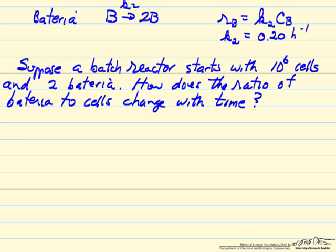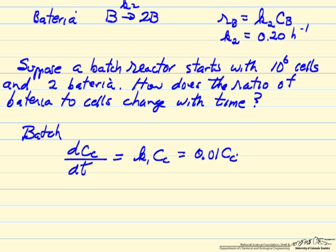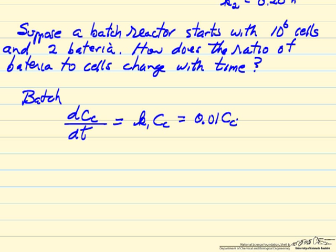And so what we're going to do is write down mass balances, so it's a batch reactor. Change in concentration of cells with respect to time is the rate constant, concentration of cells, and the rate constant is 0.01 times the concentration of cells. For the bacteria, essentially the same type expression except the rate constant is larger.